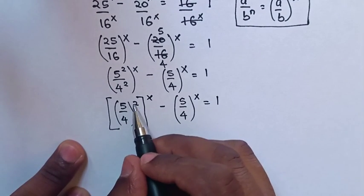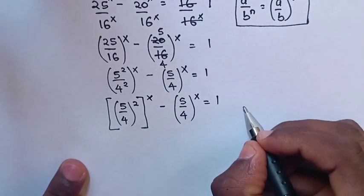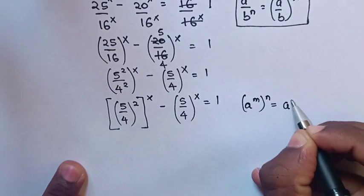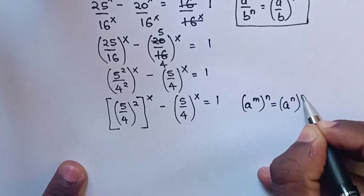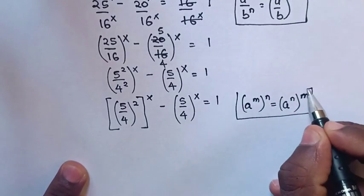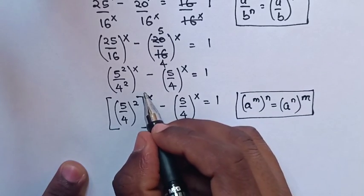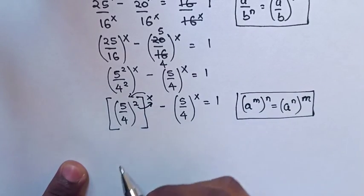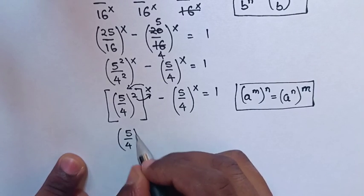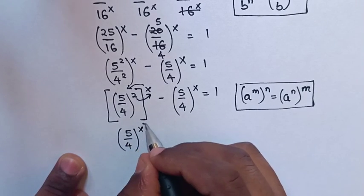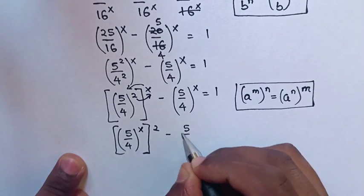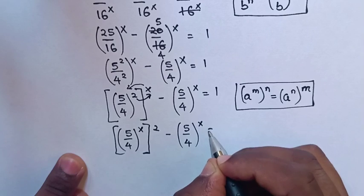From here, bracket power 2 bracket power x — we will apply the exponential rule that a power m bracket power n is equal to a power n bracket power m, so they exchange. It will be (5 over 4) bracket power x bracket power 2 minus (5 over 4) bracket power x is equal to 1.